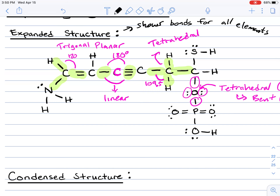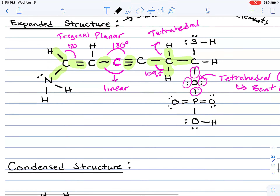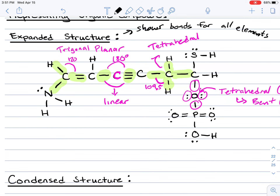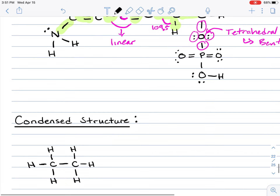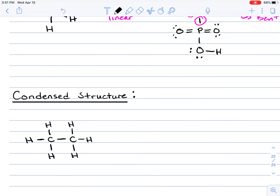The condensed structure takes the expanded structure and removes single bonds while condensing all atoms in a chemical formula-type setting. We're going to go through several examples of converting from expanded to condensed structure.